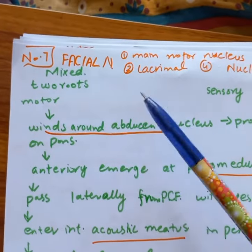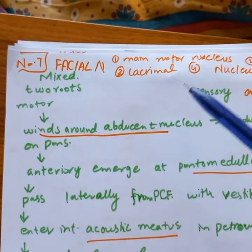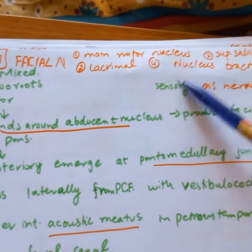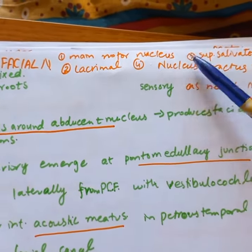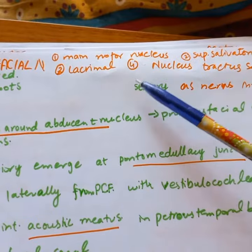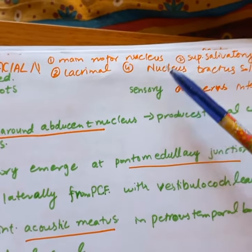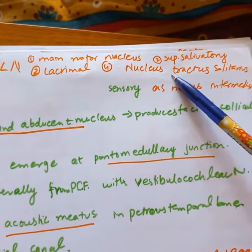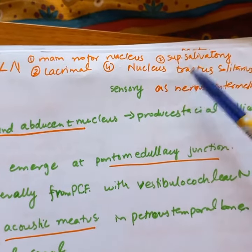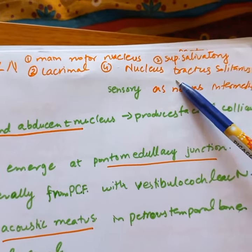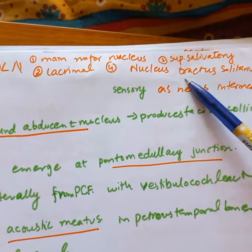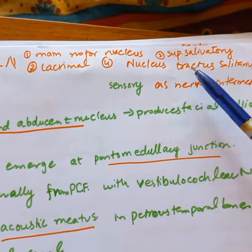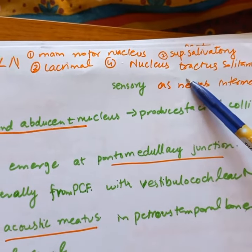To start with the Facial Nerve — we have 4 nuclei: Motor Nucleus, Lacrimal Nucleus, Nucleus Tractus Solitarius, which we share with the 10th and 9th cranial nerves.